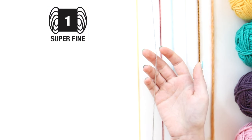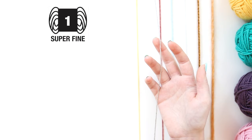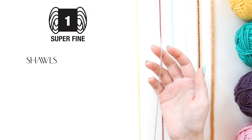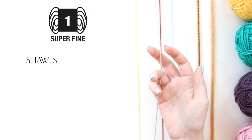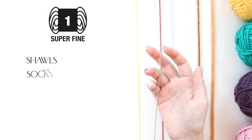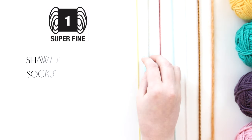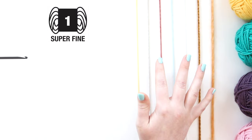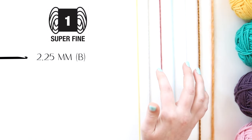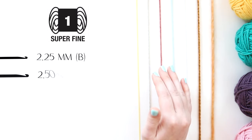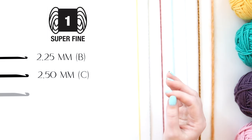Now, a weight one yarn can sometimes be used to make delicate things like shawls, just like a weight zero yarn, but it's often referred to as sock yarn because it's most often used to make socks. In general, the recommended hook sizes are a 2.25mm, a 2.5mm, a 3mm, and a 3.5mm.